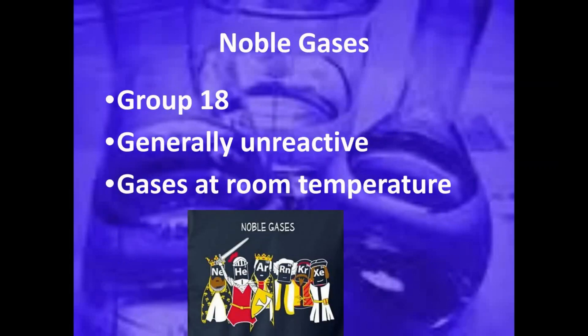The last group — our special group — is group 18, known as noble gases. They are stable, satisfied elements, which we'll look at later. They are very unreactive because they are stable, and these are all gases at room temperature.